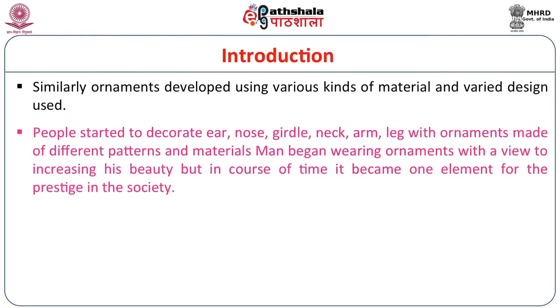For example, if we go to the forest tribes, we find that they are using ornaments made of different kinds of leaves, bamboos and others. But then the elite class would have ornaments made of gold, silver, copper — these are the different materials through which ornaments could be made. People started to decorate the ear, nose, girdle, neck, arm and leg with ornaments made of different patterns and materials. Man began wearing ornaments with a view to increasing his beauty, but in course of time it became one element of prestige in society. You will come across images of courtly personalities and noblemen wearing earrings, which are not generally common to commoners.